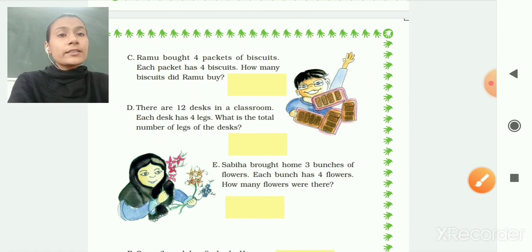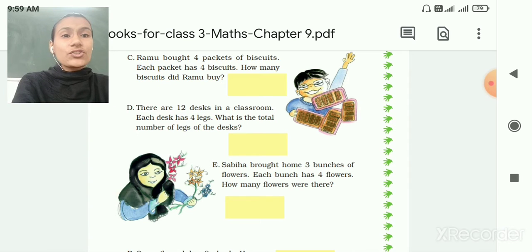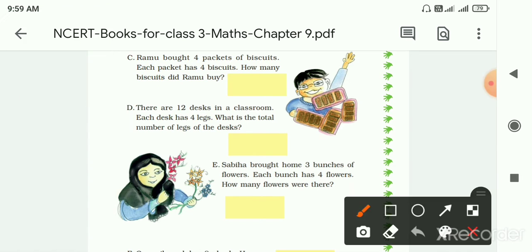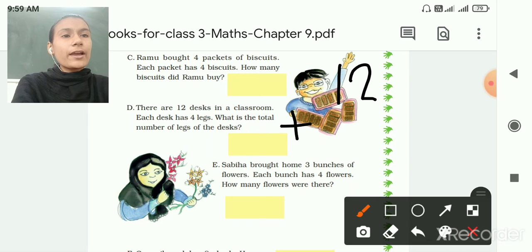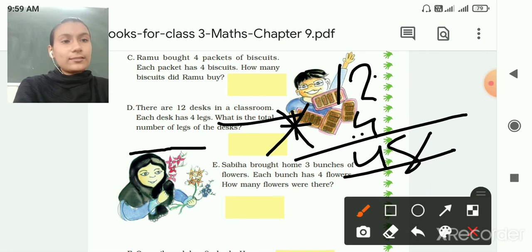Next one. There are 12 desks in a classroom, each desk has 4 legs. So what is the total number of legs of the desk? So here we will multiply 12 multiply by 4. Why? Because 12 desks are there and each desk has 4 legs. So 12 multiply by 4, 4 2's are 8 and 4 1 is 4. So the total number of legs of the desk is 48 legs.